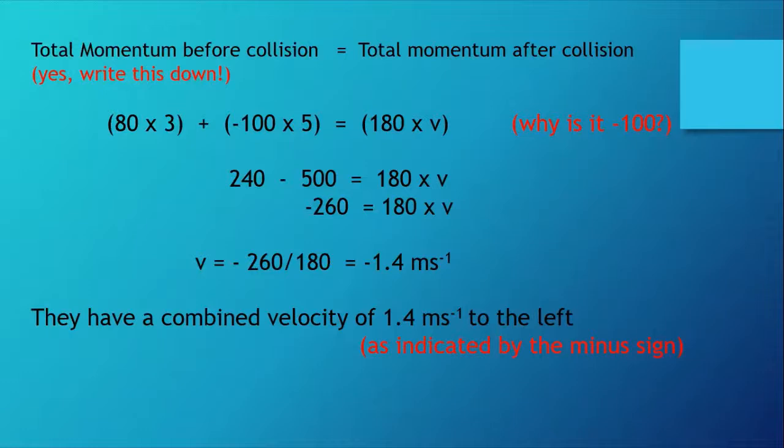So they have a combined velocity of 1.5 meters per second actually to the left. That's what the minus sign tells us, and the diagram was really an attempt to trick you. So that's a very simple and straightforward couple of questions.